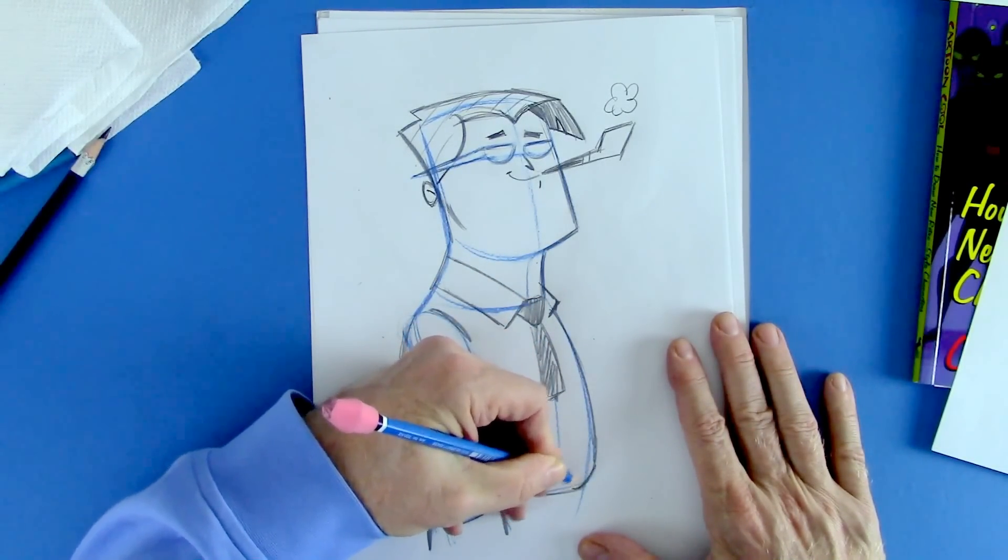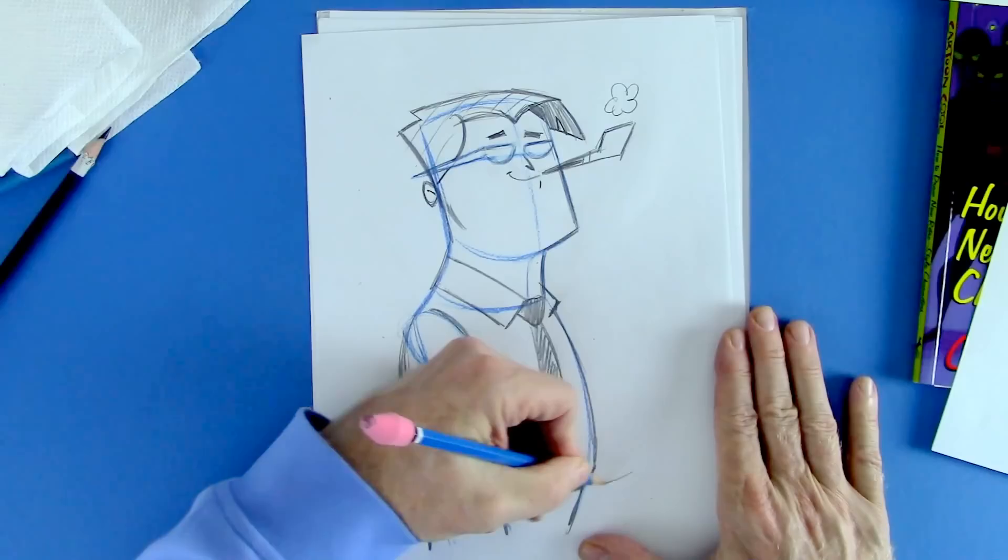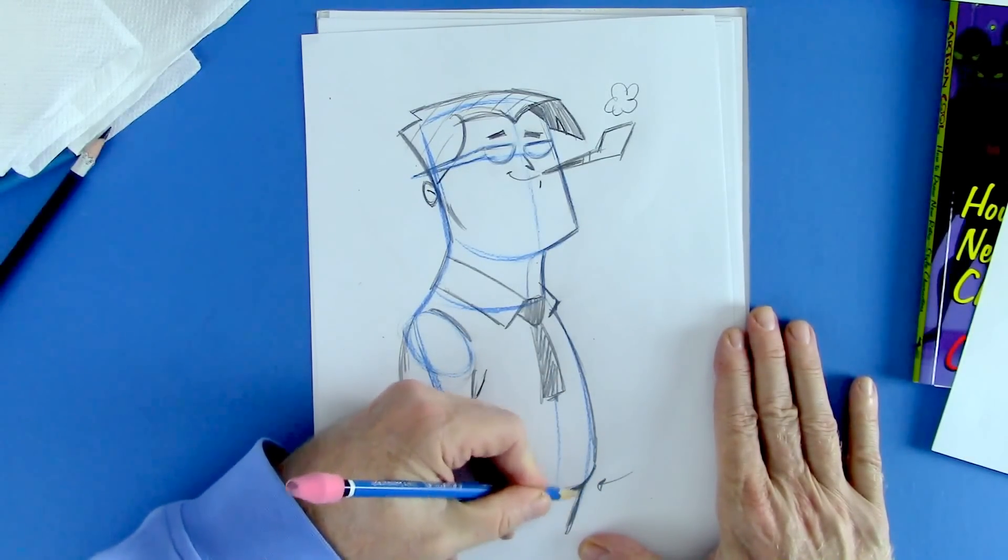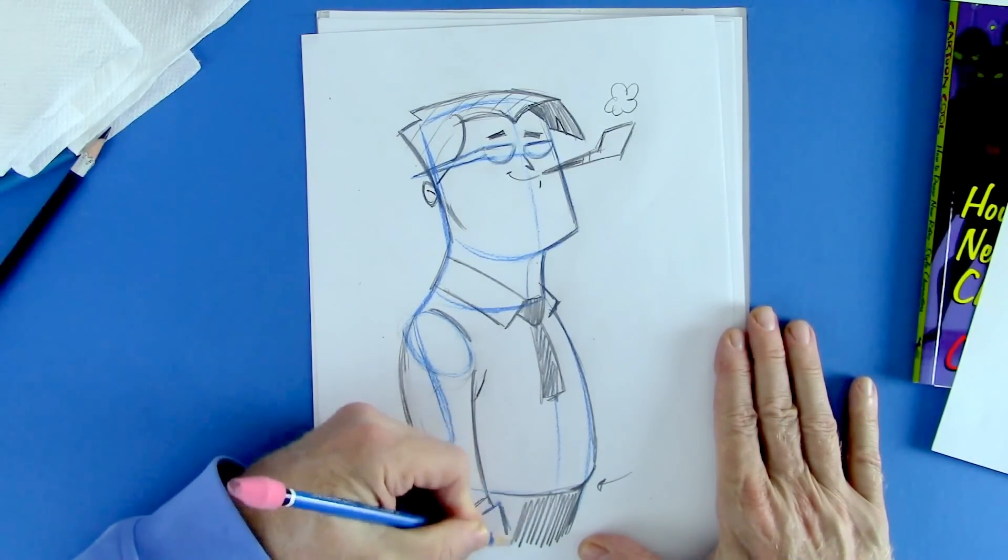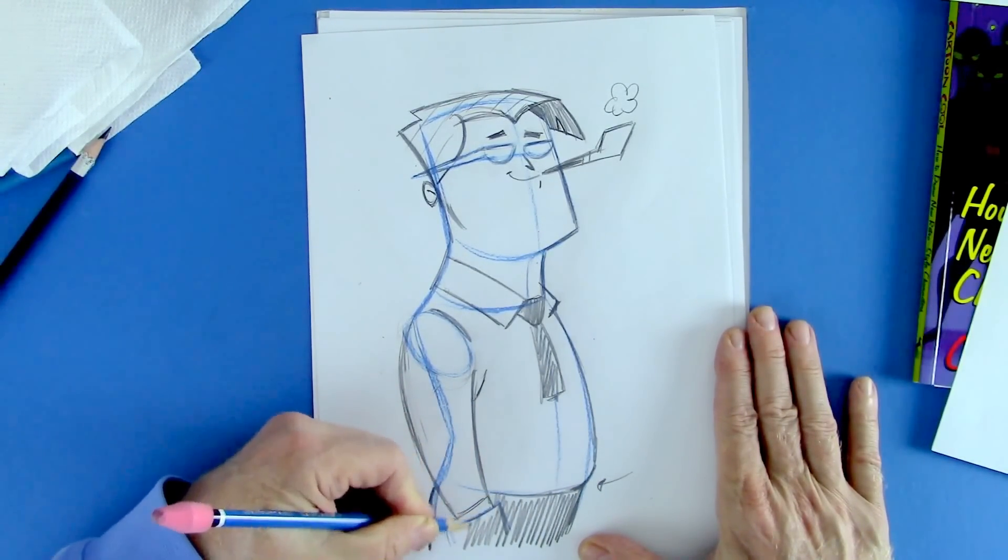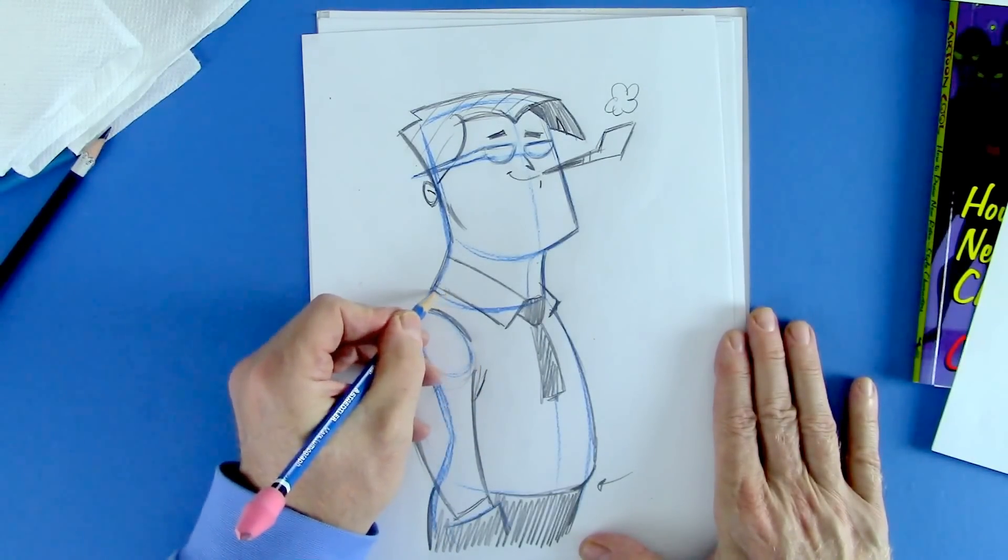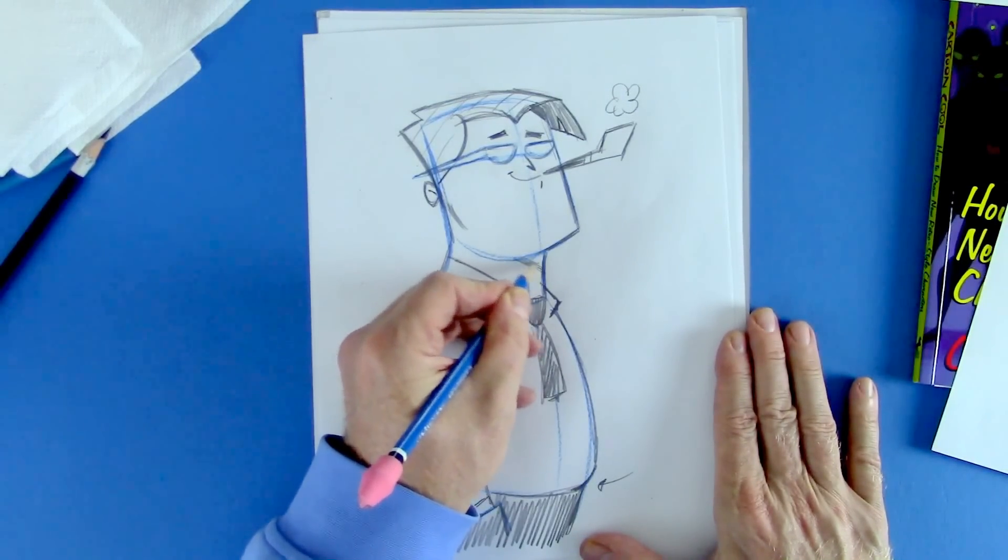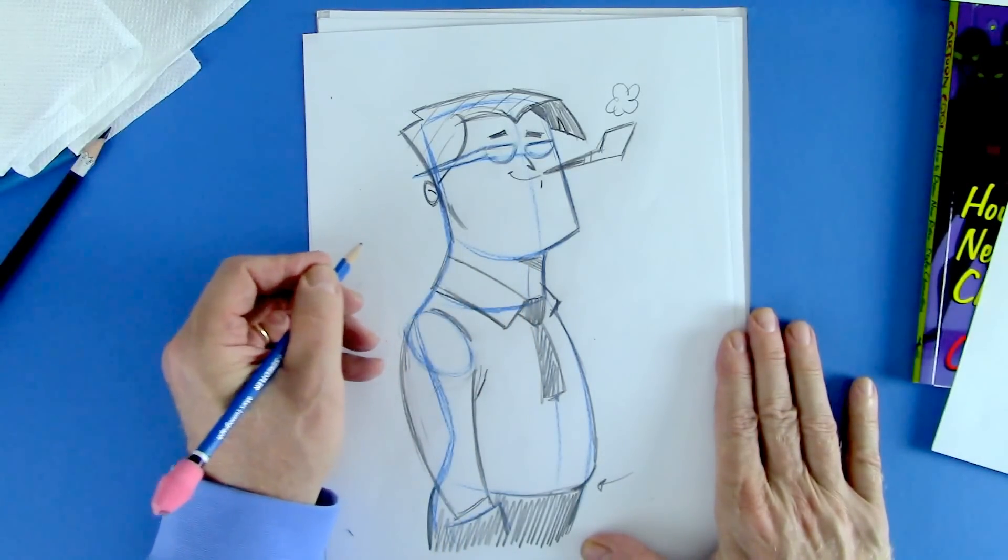Make his tummy come out a little bit further than the pants right here. See? A little cast shadow under here and then we can kind of disappear the rest of the look there.